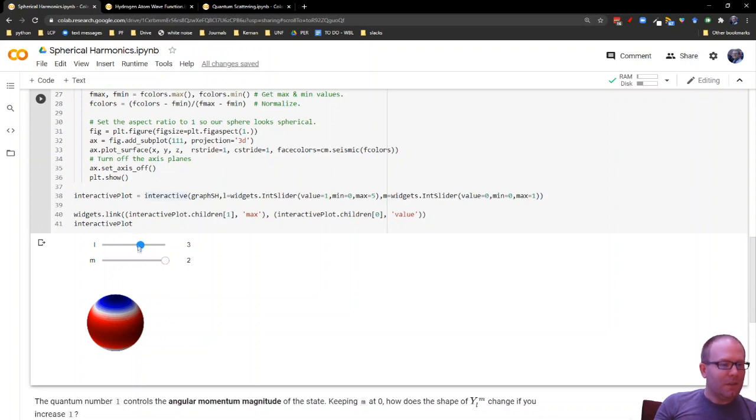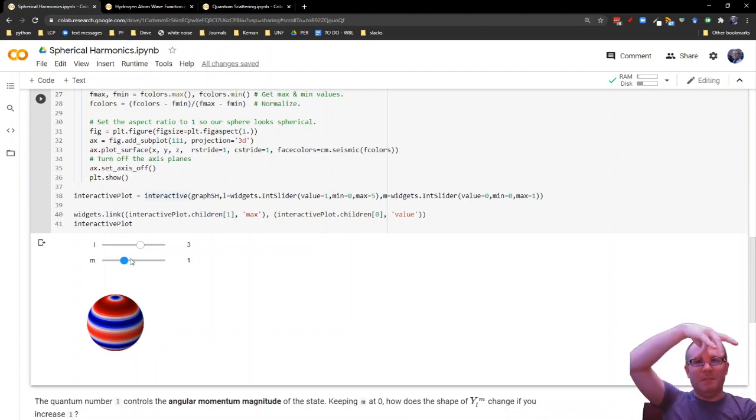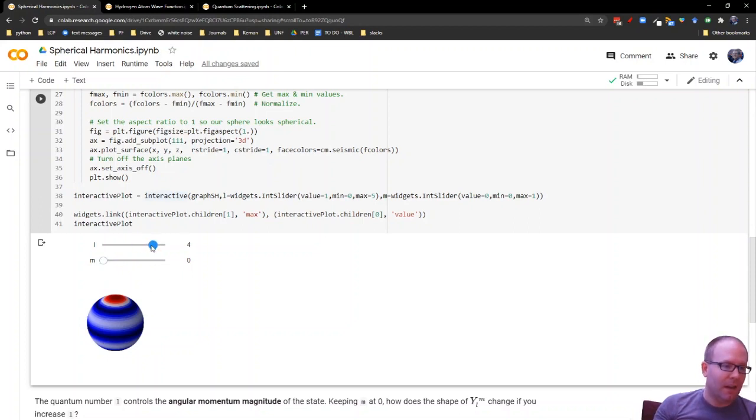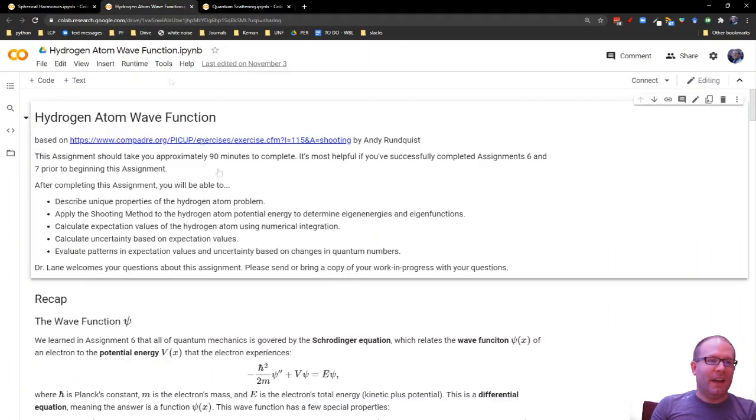And so you can use this to get a visual idea of what these spherical harmonics look like. If you've ever seen those probability balloon things in your chemistry textbook, this is where those come from - from these spherical harmonic functions. And the higher you make L, the more of these bands it's possible for you to get.